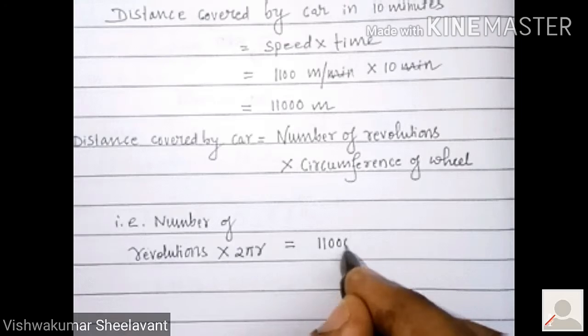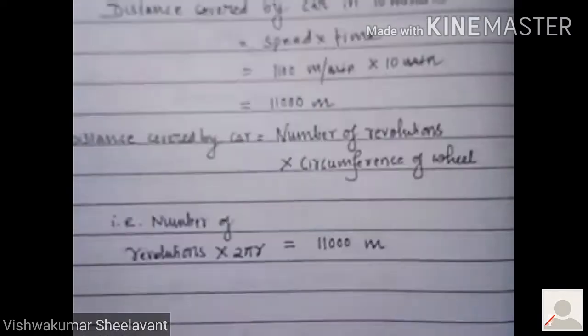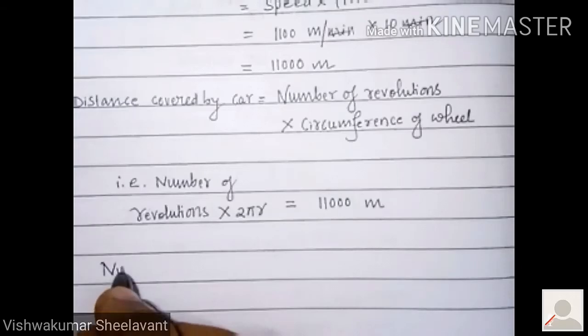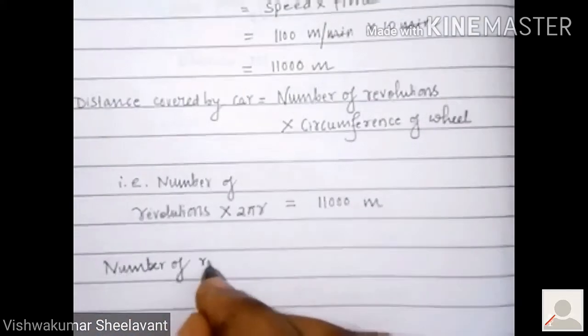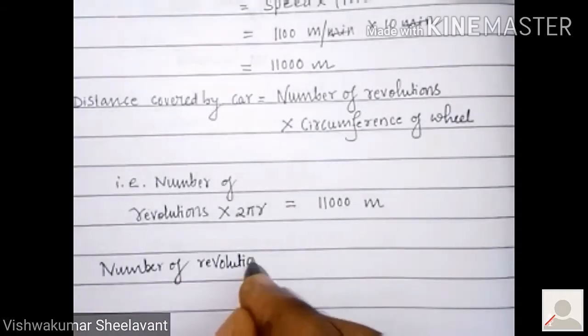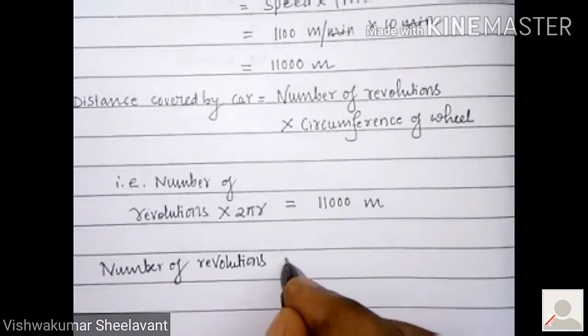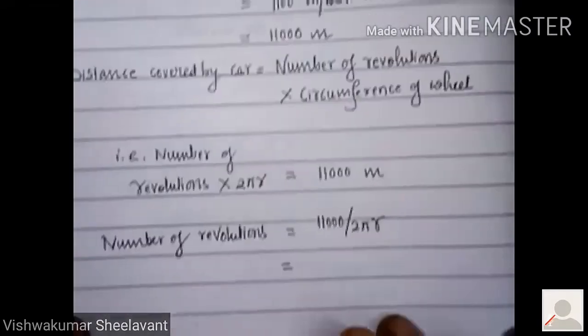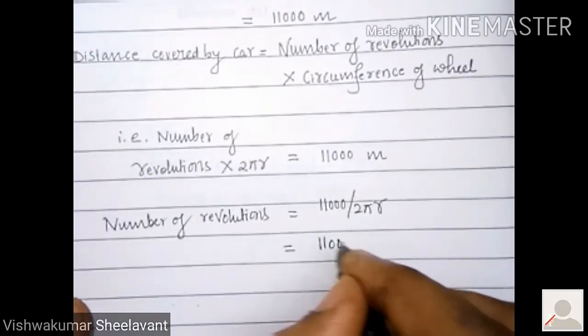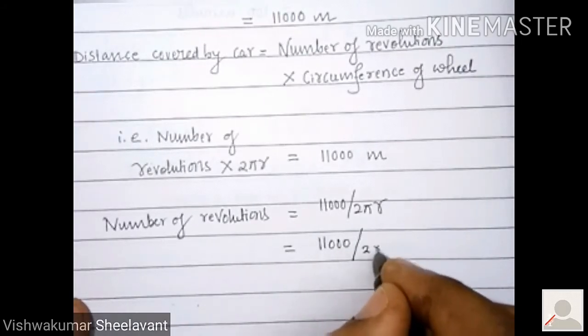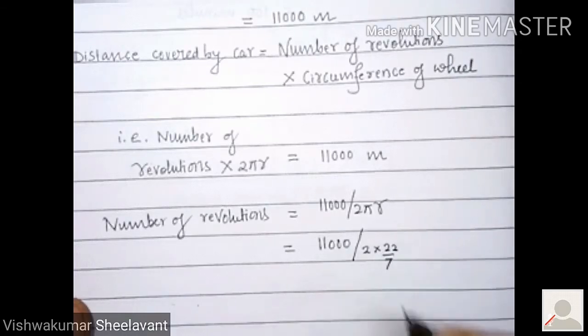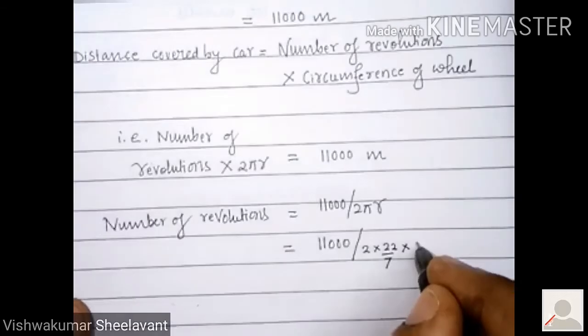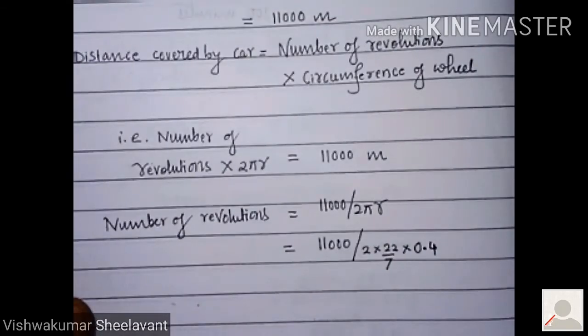Number of revolutions is equal to 11,000 divided by 2πr. That's 11,000 divided by 2 times 22 by 7 times radius, where radius is 0.4 meters.